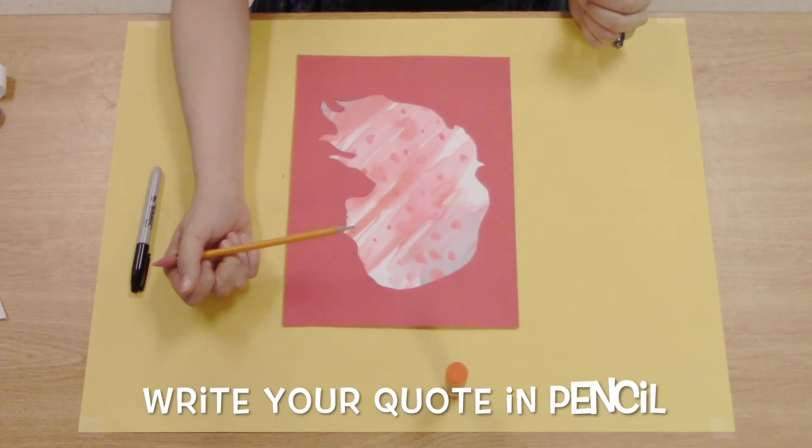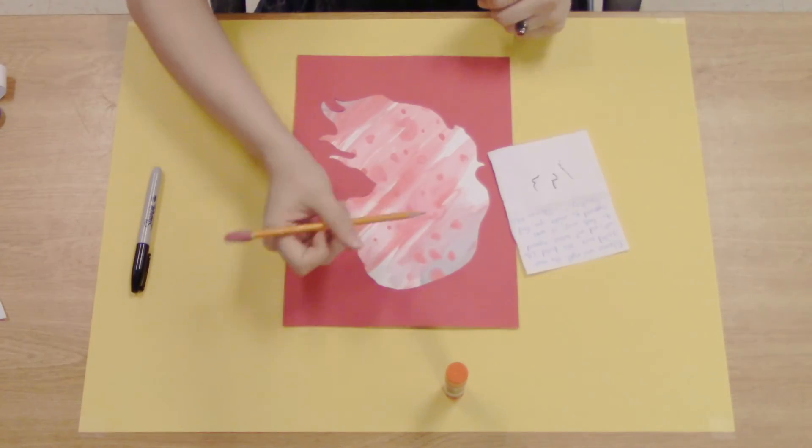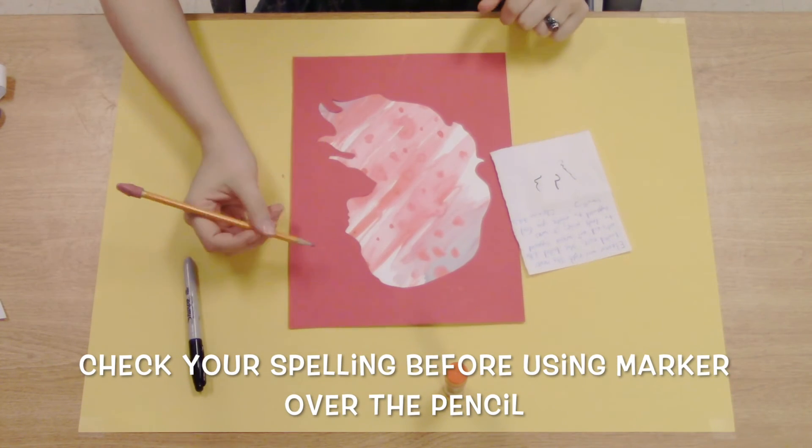Now you can write your quote in pencil to make sure you have spacing that you like. Make sure not to do the pencil too dark because you'll be going over it with marker, and you'll want to spell check before committing to marker.